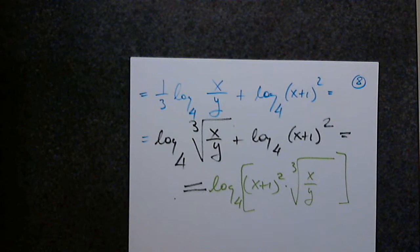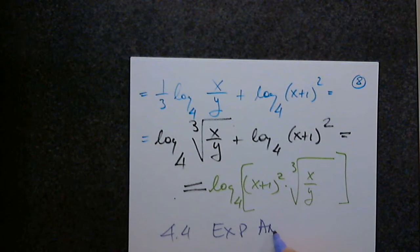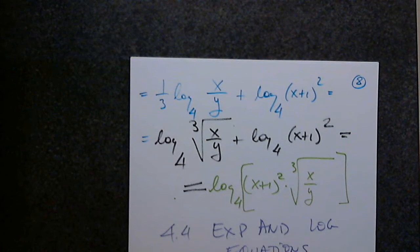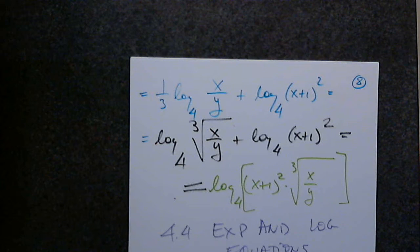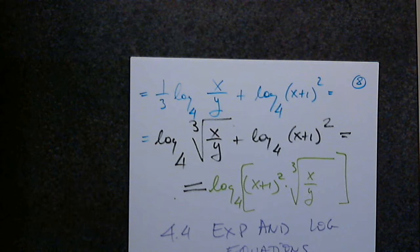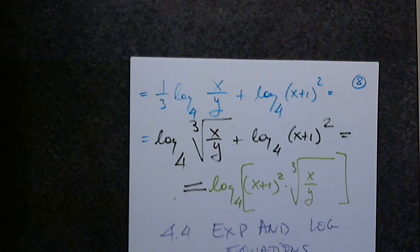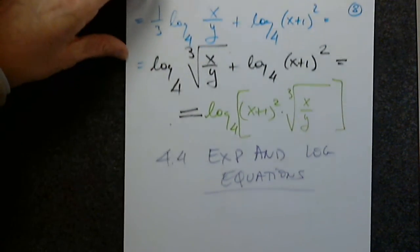Why did we study this? We learned the three properties — the expanding and the condensing — because now we want to learn how to solve exponential and log equations. The last section is the same thing with 4.4, but applied to word problems, and that will be the end of chapter 4.